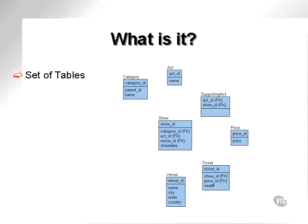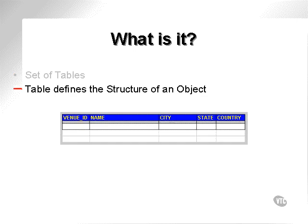As you can see from the diagram, we have a number of related tables, such as act, show, venue, or a concepts set of tables. A table defines the structure of an object. In the diagram, we see the structure of the venue table, or object, declared horizontally, with five fields: venue ID, name, city, state, and country.